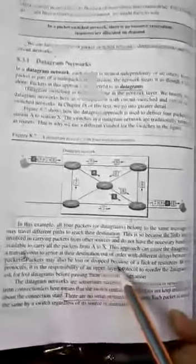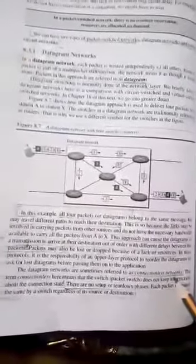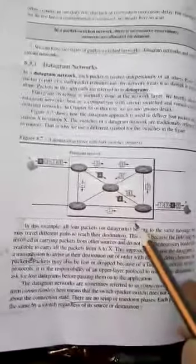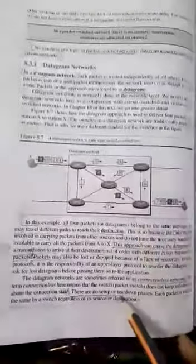The packets may also be lost or dropped because of the lack of resources. This is a connectionless network — there is no setup phase or teardown phase. In a datagram approach, there is only data transfer; there is no setup or teardown phase.